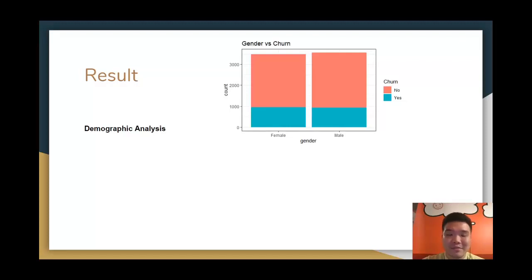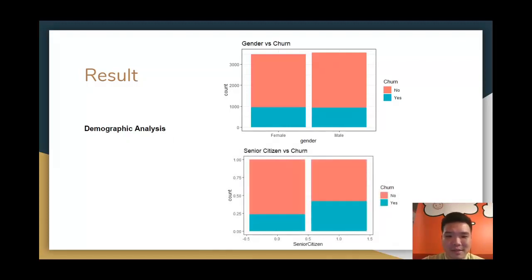Let's look from another view. It's a senior citizens versus churn. The zero represents non-senior citizens, and the one represents the senior citizens. From here, we are able to identify the senior citizens actually has more churn rate compared to non-senior citizens.